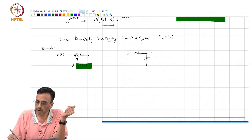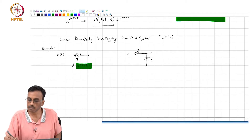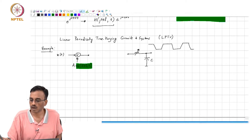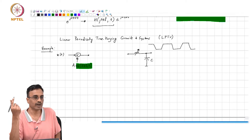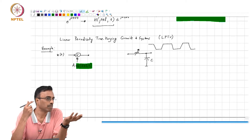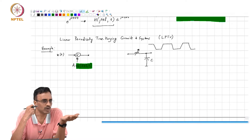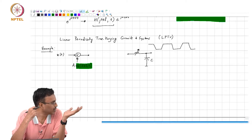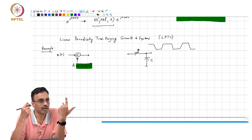Here is an example where you have a resistor which is varying periodically with time. Can somebody think of a practical example of a resistor that varies periodically with time? A periodically operated switch is an example, where the resistance varies from some small value — ideally 0 — to some large value — ideally infinity. But that need not be the only form of periodic variation; any other periodic variation also will work.